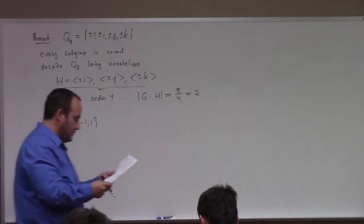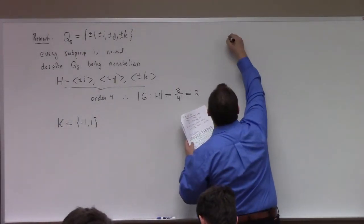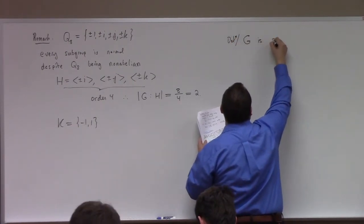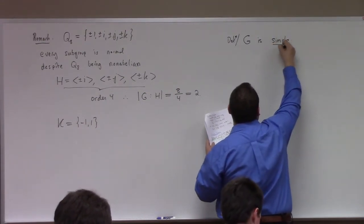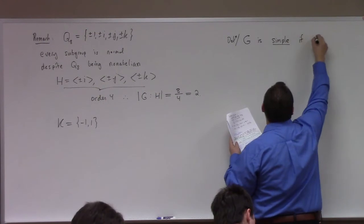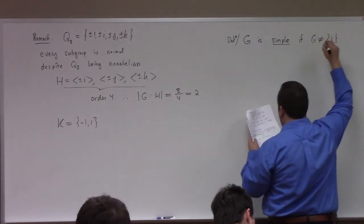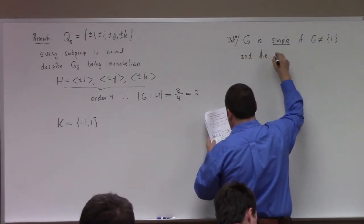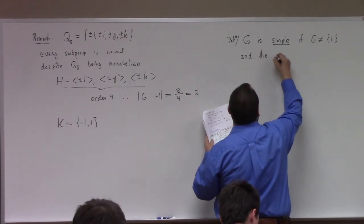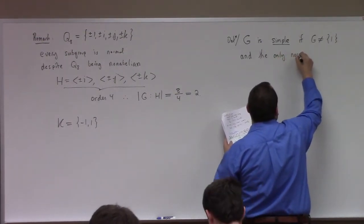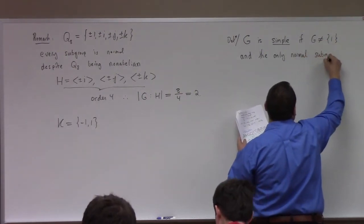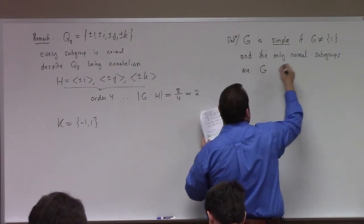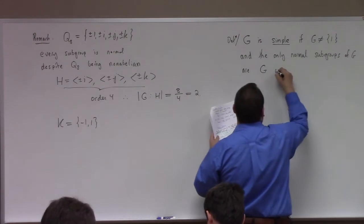Definition: G is simple if G is not equal to the trivial group, and the only normal subgroups of G are G itself and {1}.